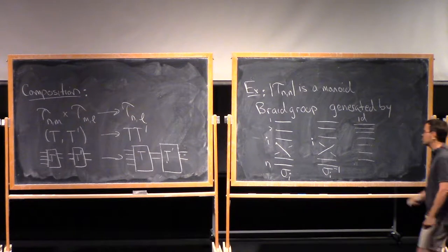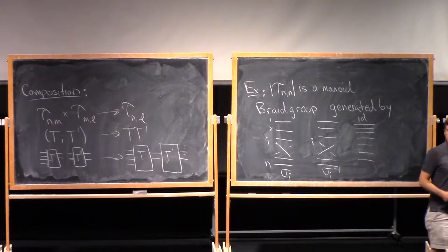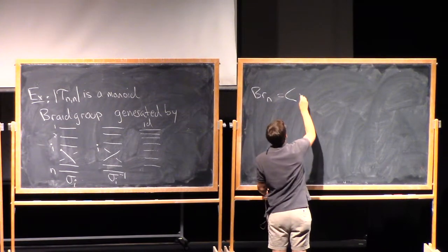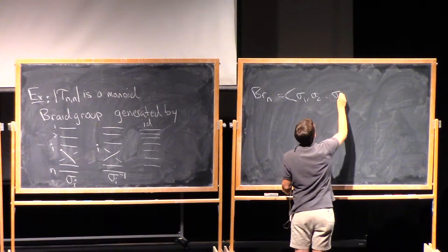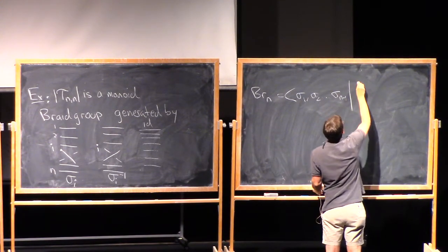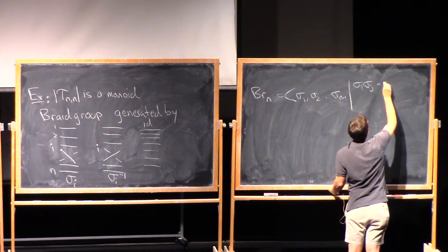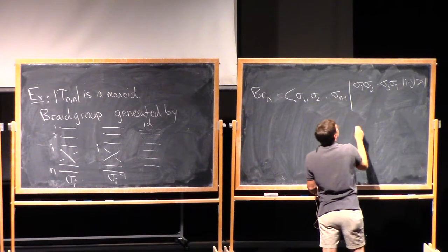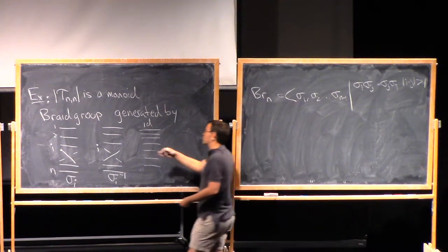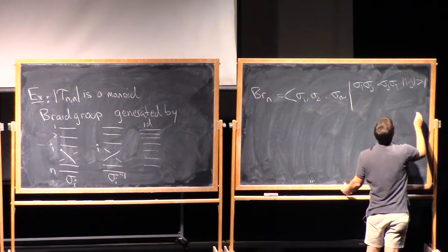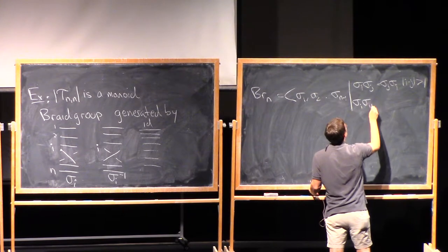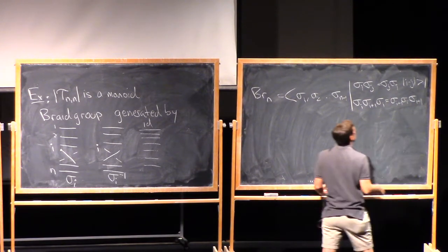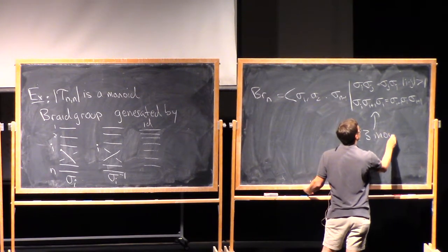The braid group — I'll call it BR_n, braids on n strands — has a group presentation generated by σ_1, σ_2, up through σ_{n-1}. We have relations saying σ_i σ_j = σ_j σ_i if the distance between i and j is bigger than 1 — this means you can slide independent crossings past each other. And then there's the braid relation: σ_i σ_{i+1} σ_i = σ_{i+1} σ_i σ_{i+1}. This is the Reidemeister 3 move for these diagrams.